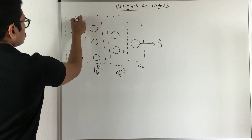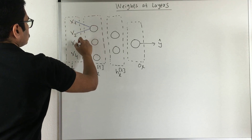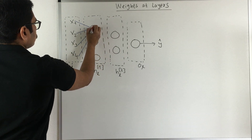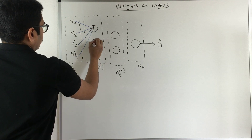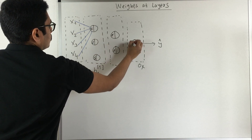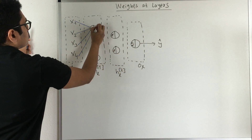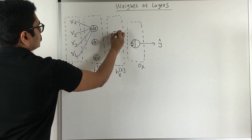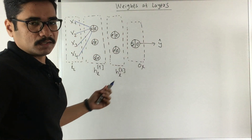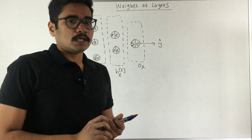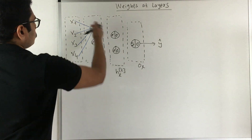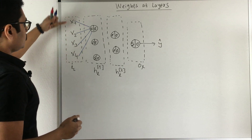Now you need to connect these neurons. Each neuron gets input from all four inputs. Inside each neuron there are two sections: first it computes a linear summation, and then it has a non-linear function applied to it. For now we are not considering any biases — we just want to represent our weights at different layers and see how they are computed.